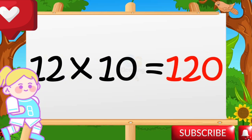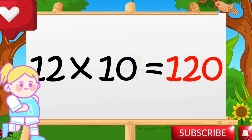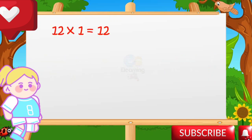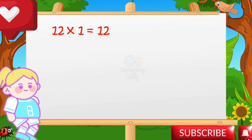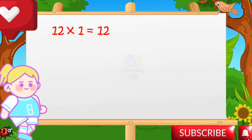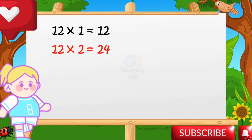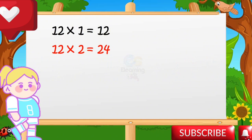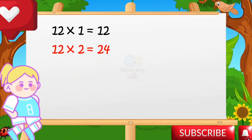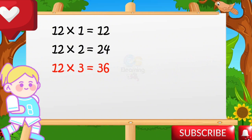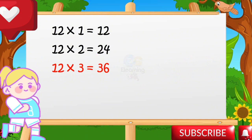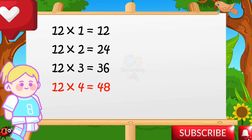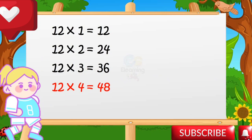12 ones are 12. 12 twos are 24. 12 threes are 36.